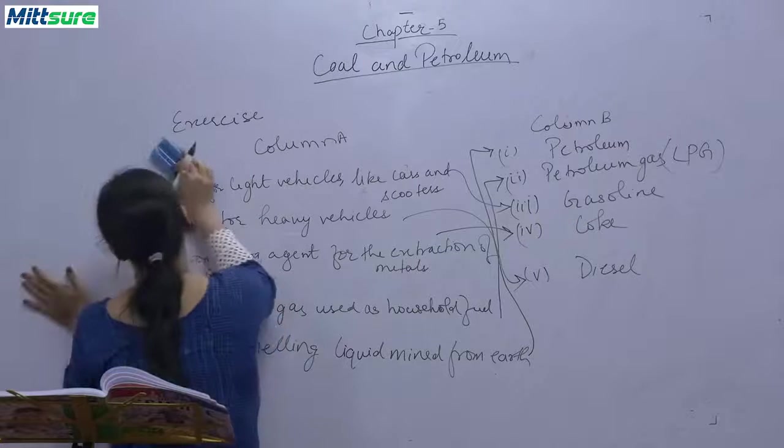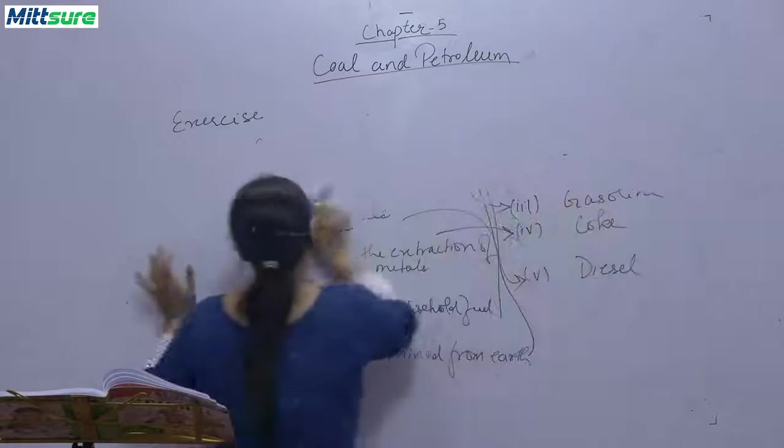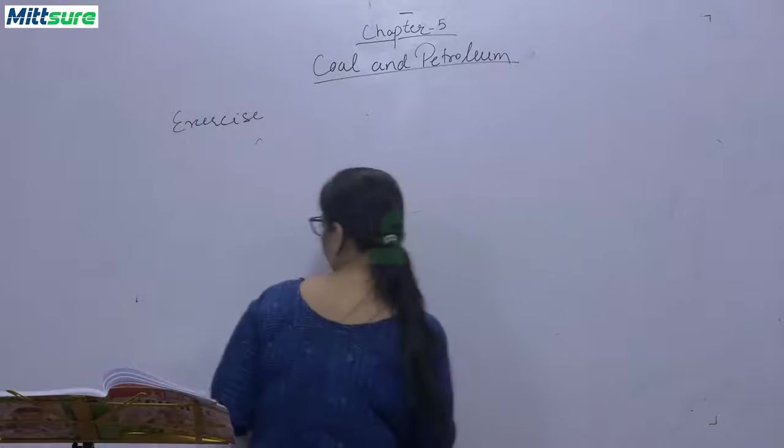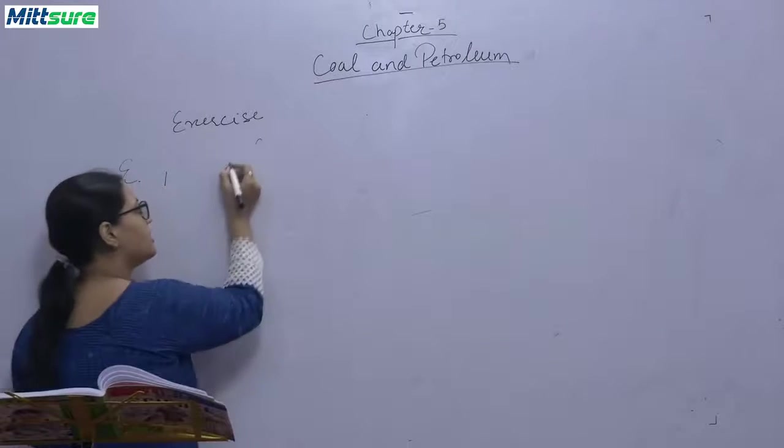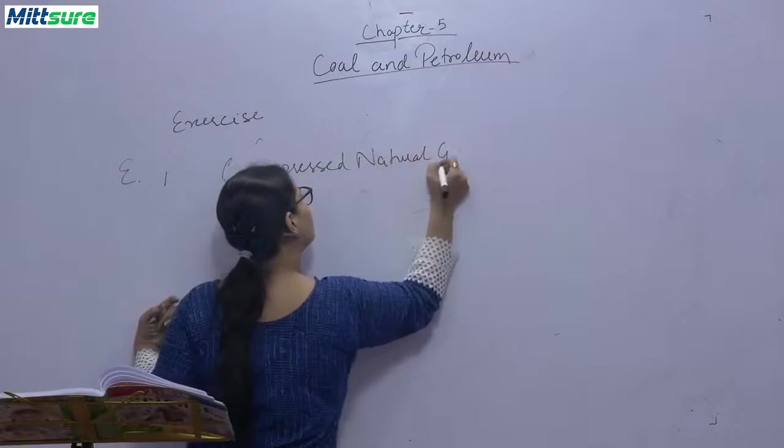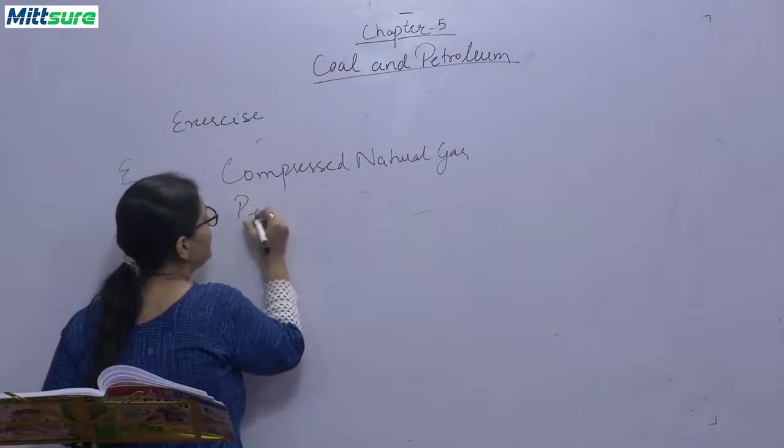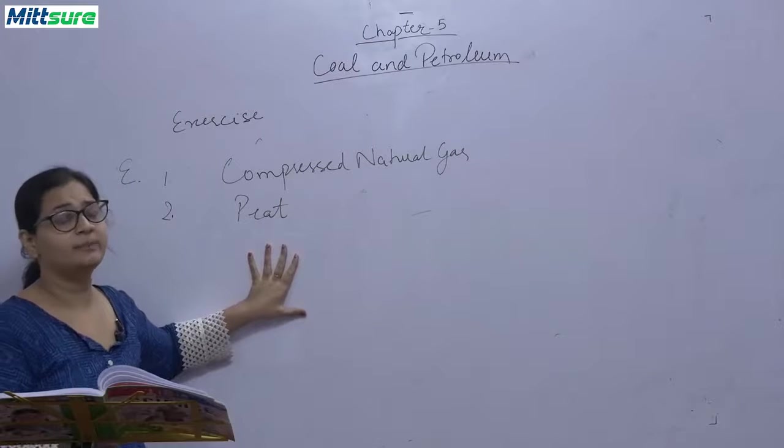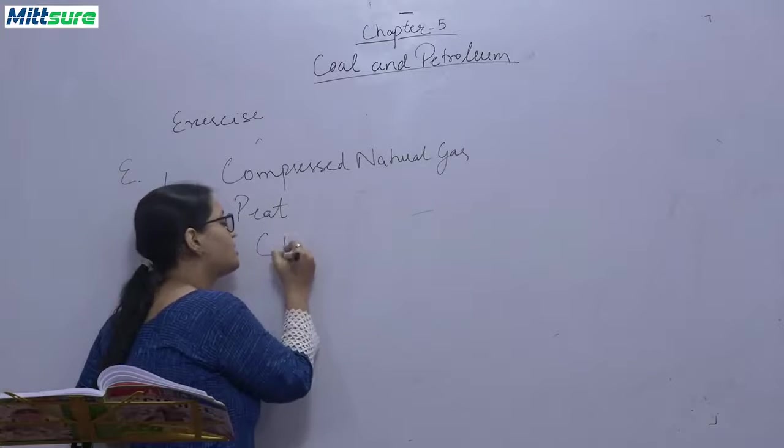Now we will be discussing, write one word for the following. The question is E question. First, the full form of CNG is compressed natural gas. Second, a form of coal with minimum percentage of carbon is peat. It has only 11% of carbon concentration. And highest is anthracite, which is 96%. Third, a natural gas under high pressure, it is CNG.